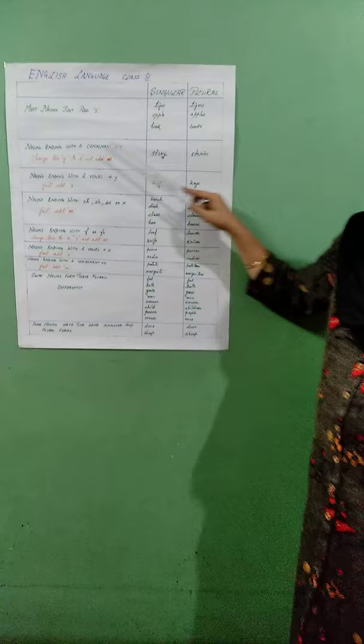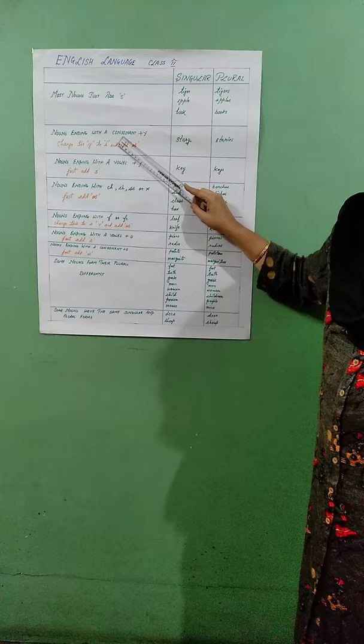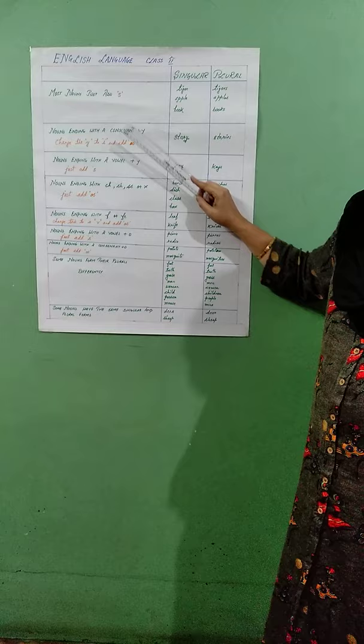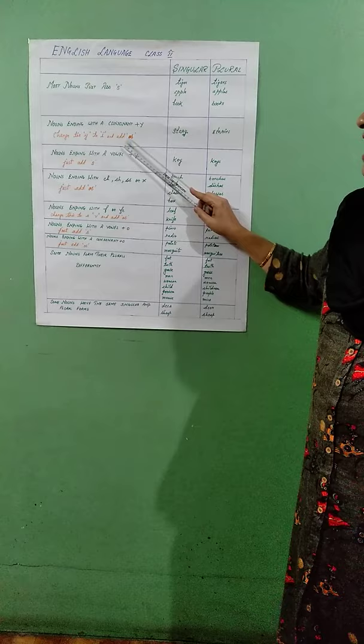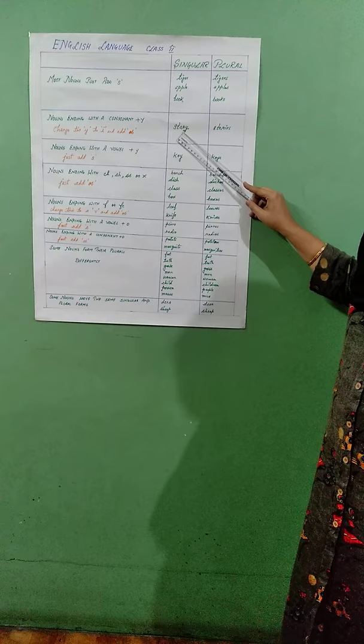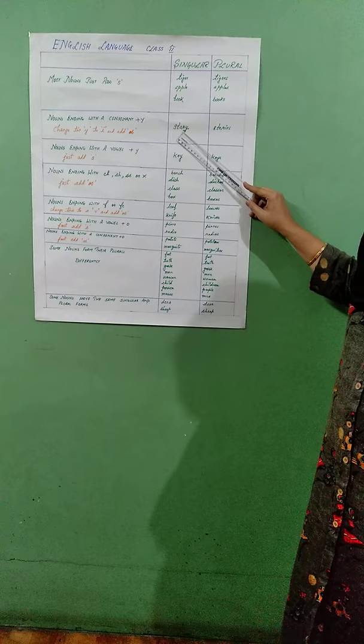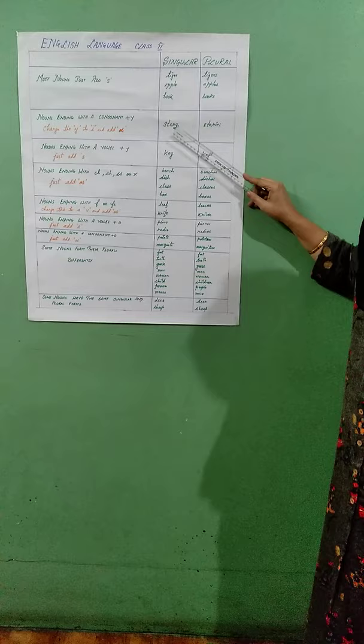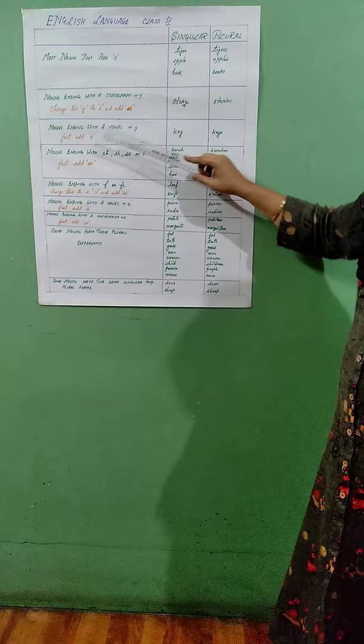Moving on to the second rule: we have nouns ending with a consonant and having a Y at the end. These words can be changed into their plural forms by changing the Y to I and then adding ES. For example, let's take the word story — it ends in R and has Y at the end. So, this Y will be changed into I and ES will be added, so it becomes stories.